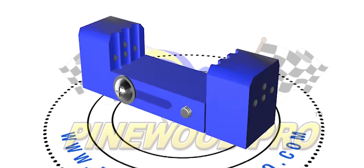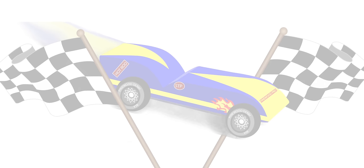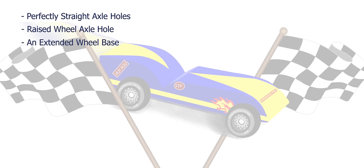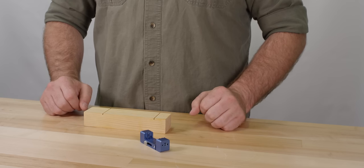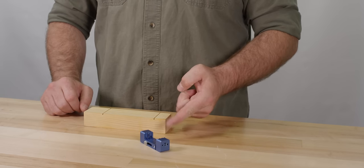The Pro Driller gives you five ways to increase your car speed. Drill perfectly straight axle holes. Drill a raised wheel axle hole. Create an extended wheel base car. Cant your axles using our exclusive 2.5 degree angled axle holes. And use it to drill holes for a rail rider car. Now I will show you how easy it is to use the Pro Driller.